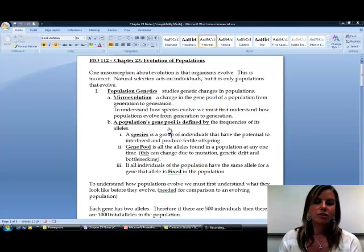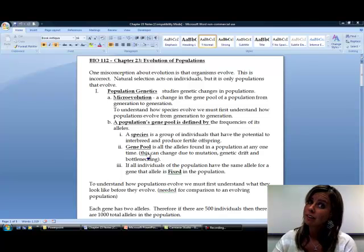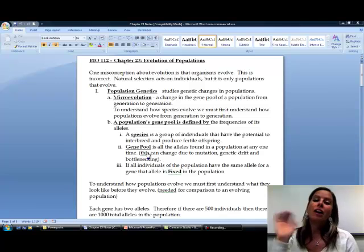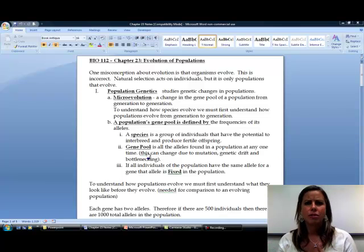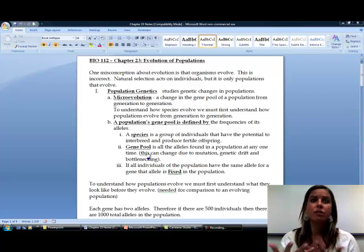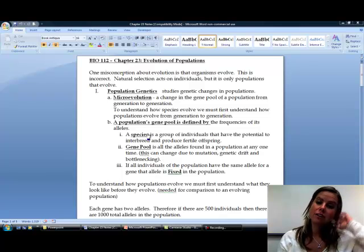So a couple of definitions that we need to go over. First of all, the gene pool. The gene pool is going to be all of the alleles that are found in a population at a time. So that's a word from Bio 111. Just to review, an allele is an alternative form of a gene. So like with eye color, you could have the big B or the little b, and those would be your alleles.